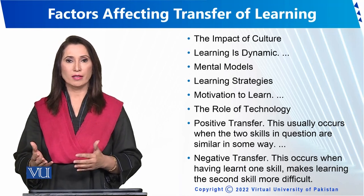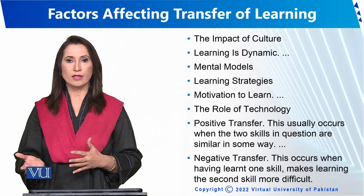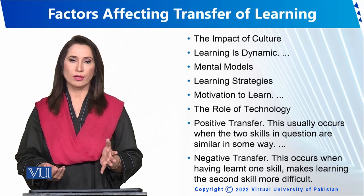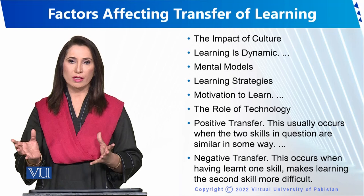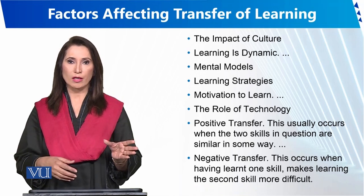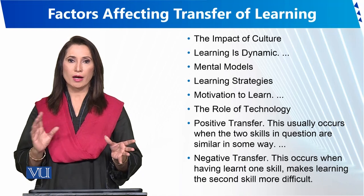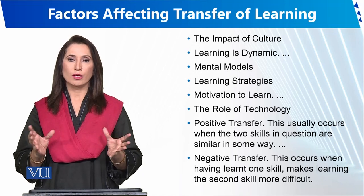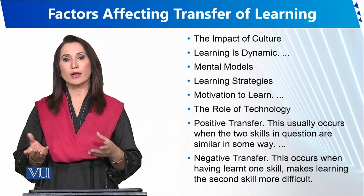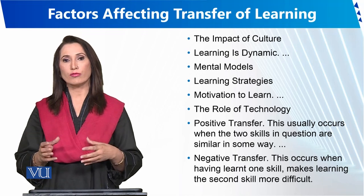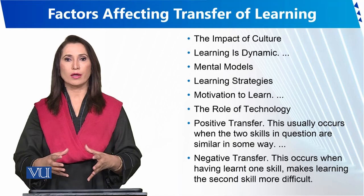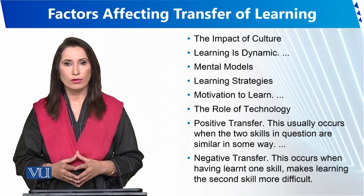If I have learned certain things securely, then I don't have a problem with other things. Sometimes a similar skill can be helpful, but if the information is contradictory, then the transfer of learning becomes difficult.